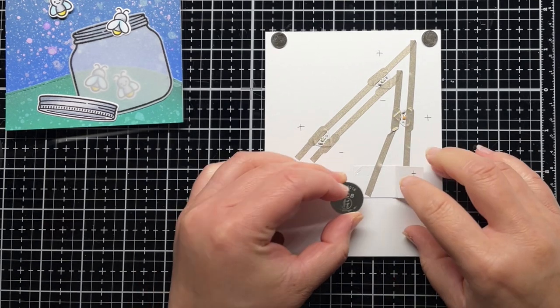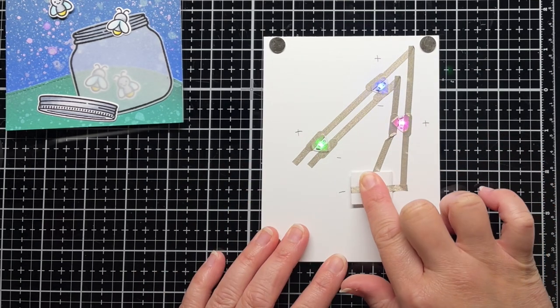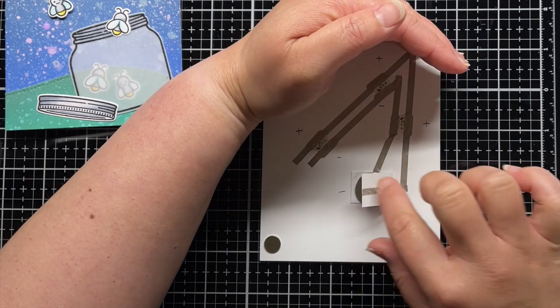When you place the battery inside the holder and press down, the LED stickers light up. For this sample, I'm using green, blue, and pink LED stickers.